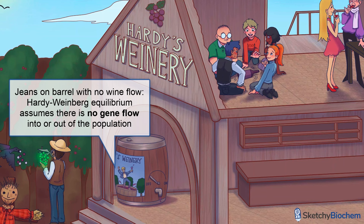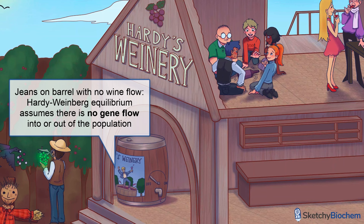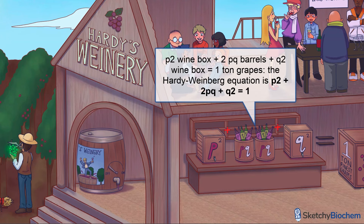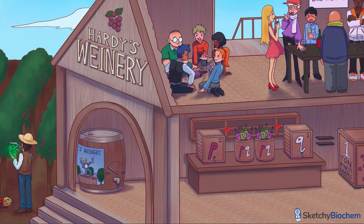I've said Hardy-Weinberg a whole mess of times, and you're probably dying to see the equation. Why did they choose P and Q as the variables? Was it so someone could make a joke about minding their P's and Q's doing population genetics calculations? I resent the dad joke, but respect the long play. The Hardy-Weinberg equation is P squared plus 2PQ plus Q squared equals 1, which you can see here in the square P wine box, these two PQ barrels, and the square Q wine box. Before we get into all the details of the full-blown Hardy-Weinberg equation, let's take a look at the variables P and Q, as well as a simpler equation that the Hardy-Weinberg equation is derived from.